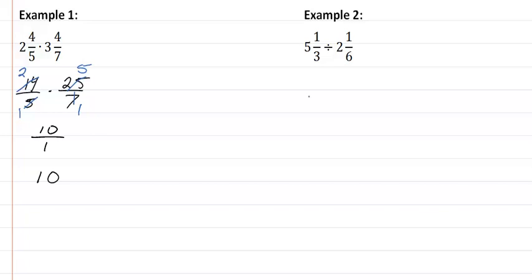In our second problem, again convert to a fraction. So we're going to get 16 thirds divided by 13 sixths. Now when you write this as a multiplication problem, so we have 16 thirds times 6 thirteenths.